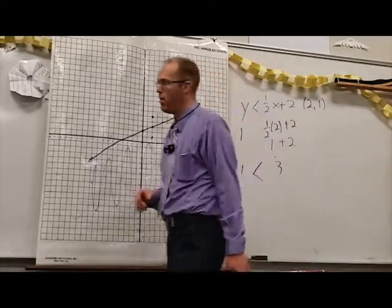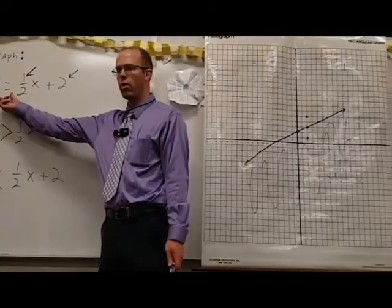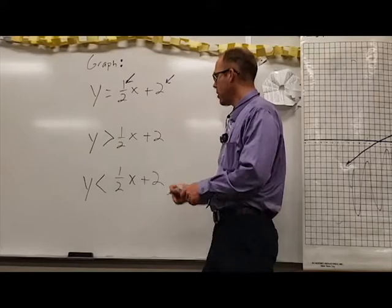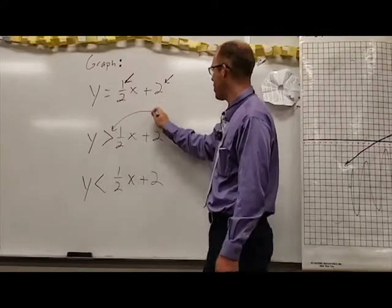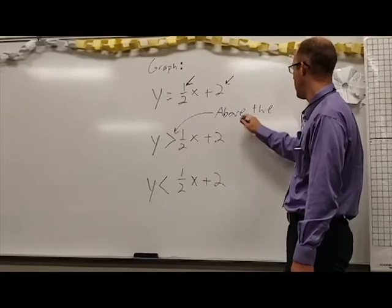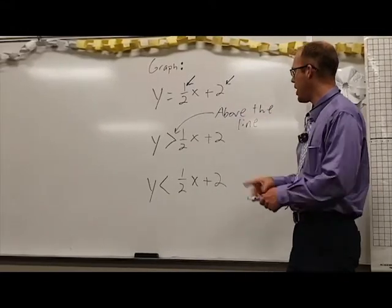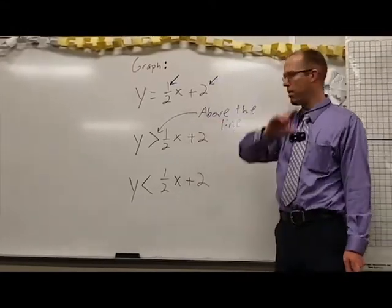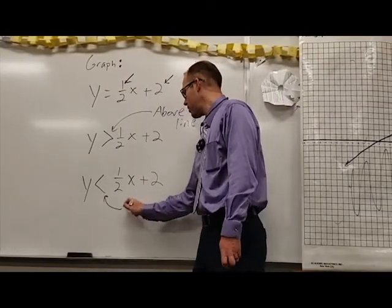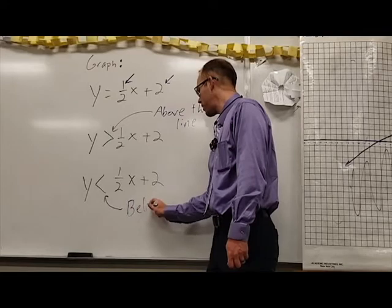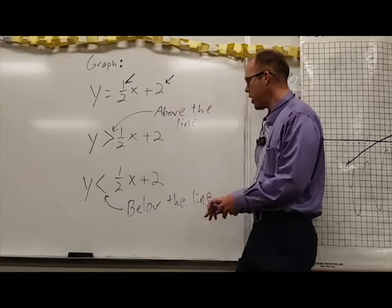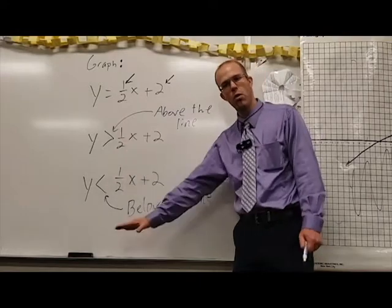Let's put a few things together. When it's equal, this is everything on the line. When our y value is greater, this is everything above the line, so we shade above. When our y values are smaller, this is everything below the line, so we shade everything below.